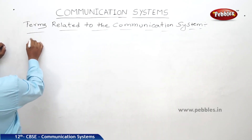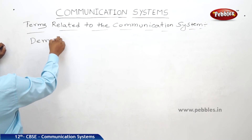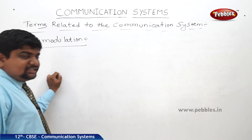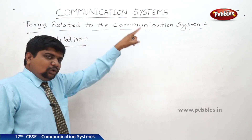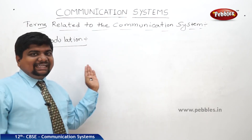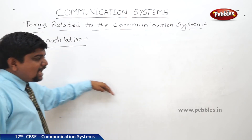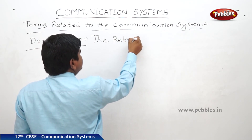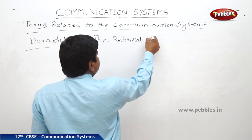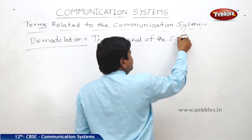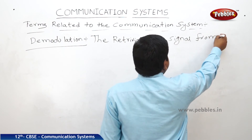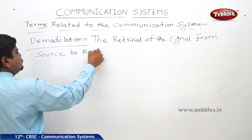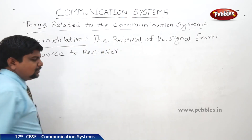Next one is demodulation. What is demodulation? It is exactly opposite to modulation. In modulation, low to high. In demodulation, high to low. It is the retrieval of the input signal — sending the signal back from source to receiver — and this is called demodulation.